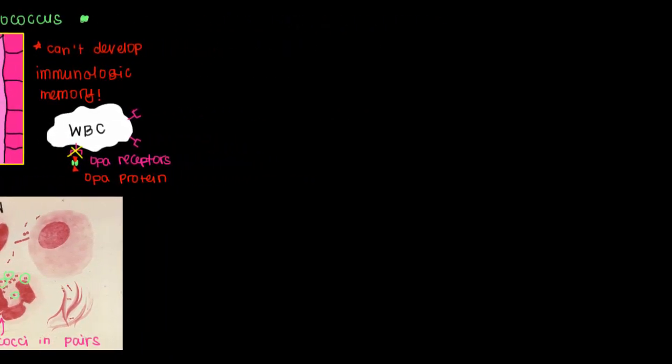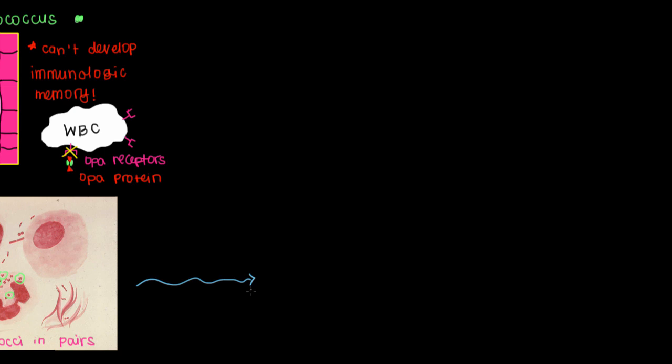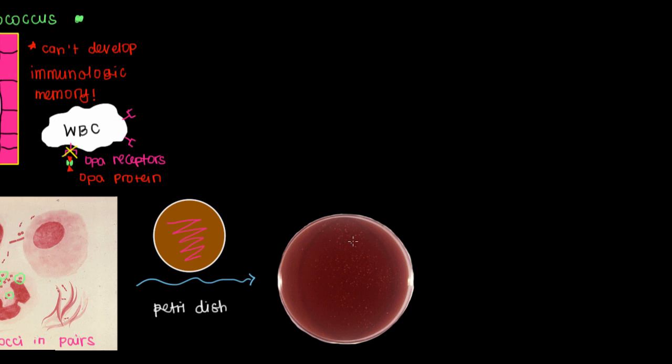But another step we can take is to take the swab and smear it on this petri dish. What that allows us to do is that we'll put our swab here and we'll smear the sample we got from the patient and we'll let it grow over a few days. And we may see this. Now this is a petri dish that we've grown some bacteria on, so we refer to this process as a culture.